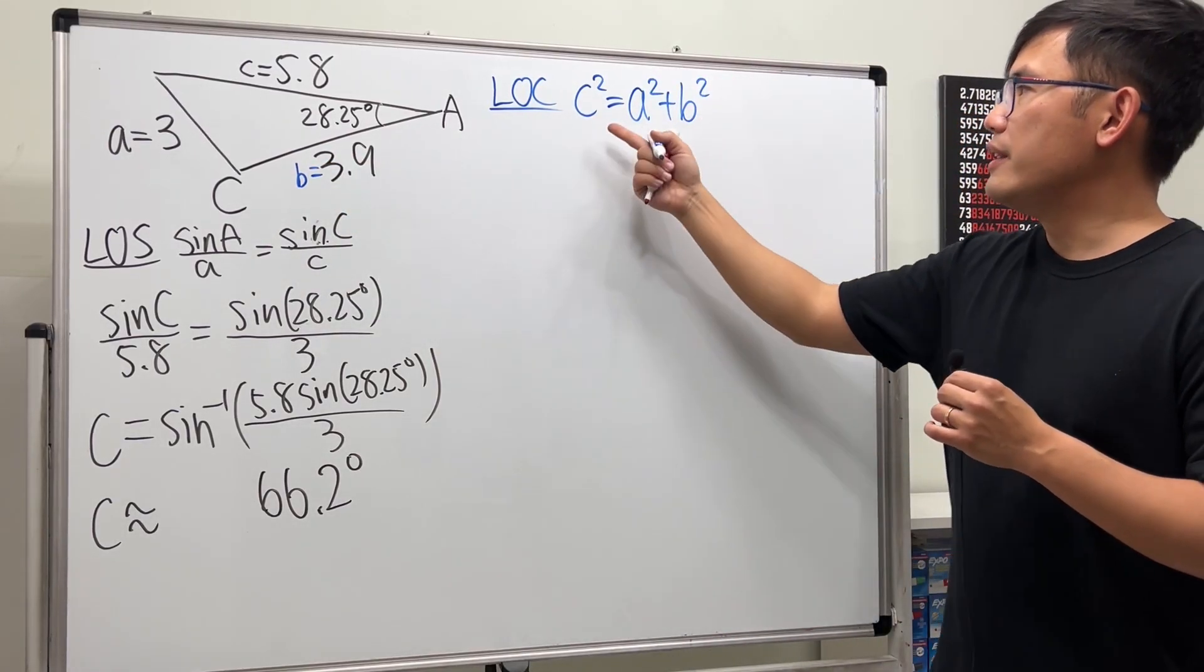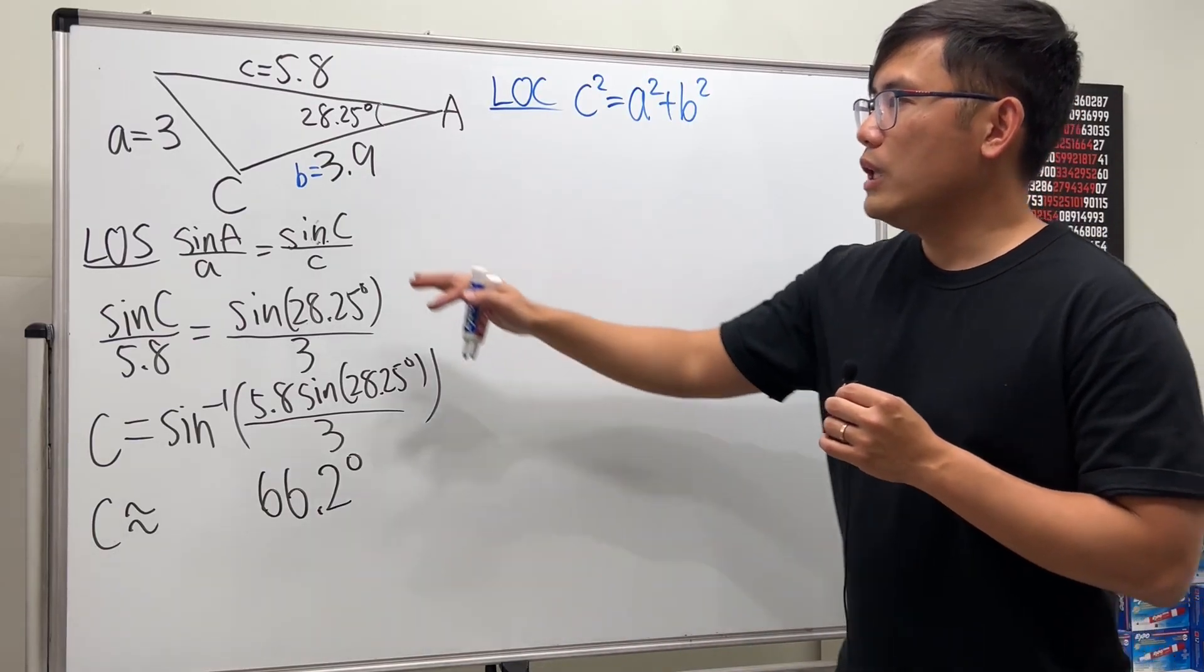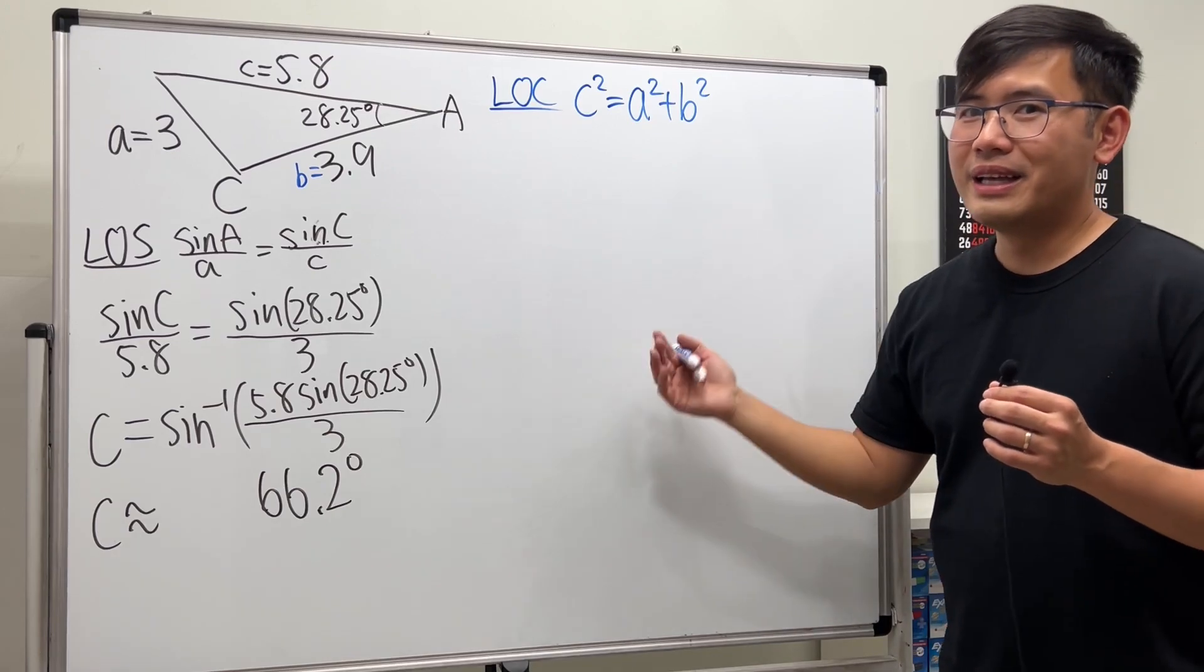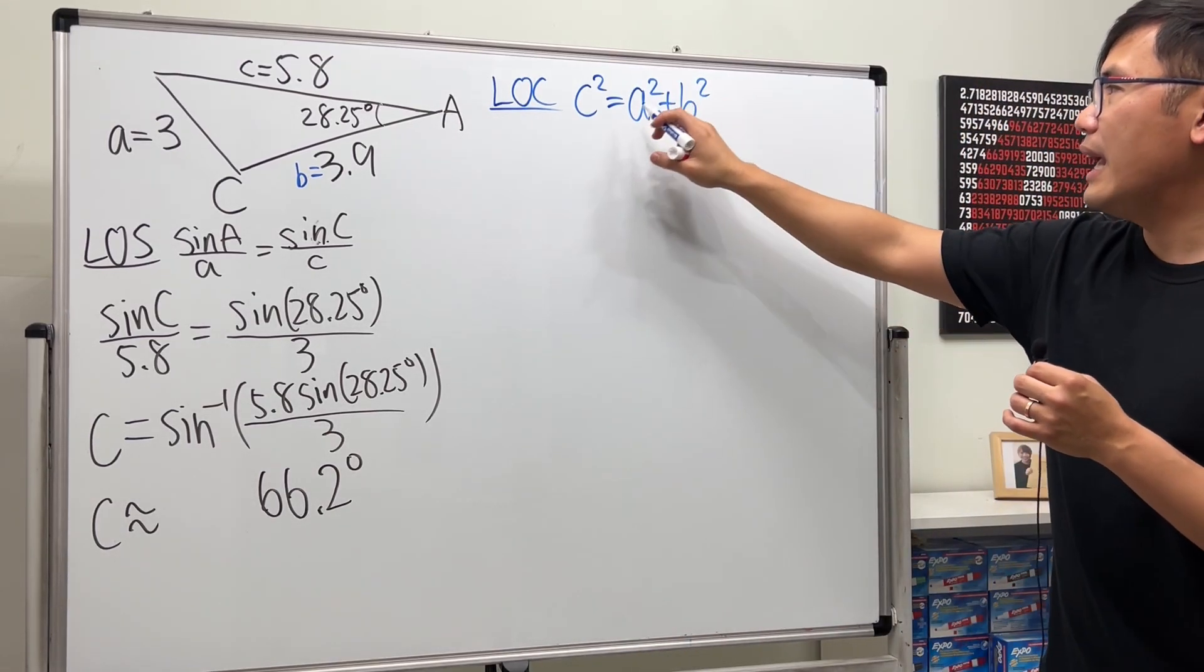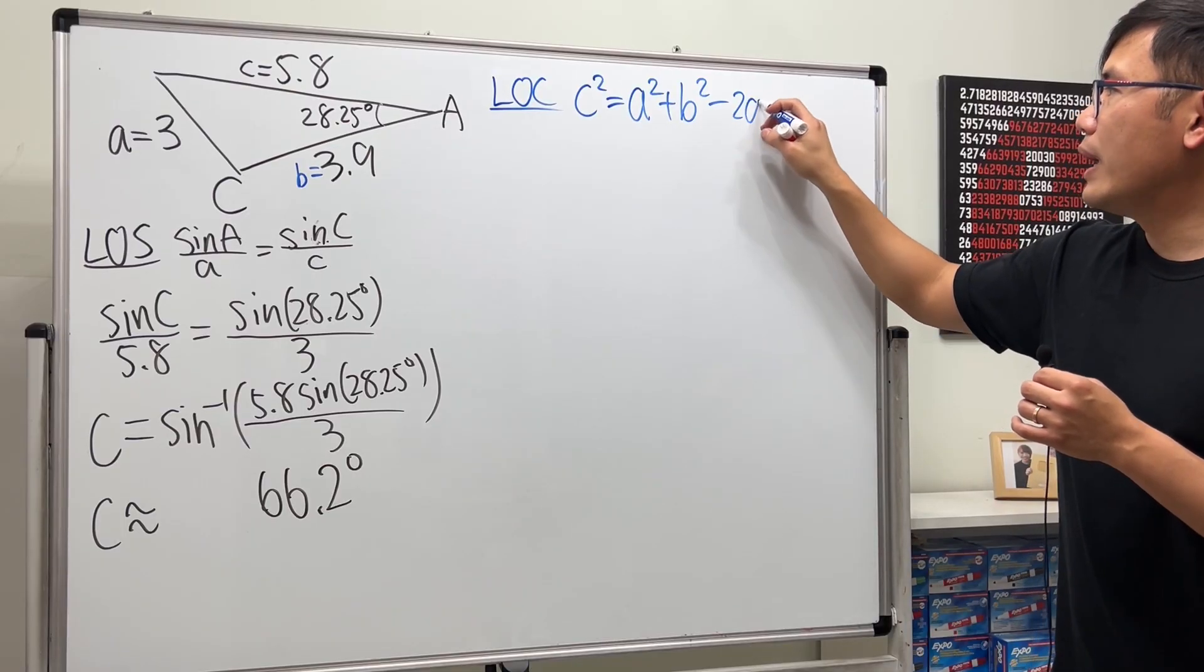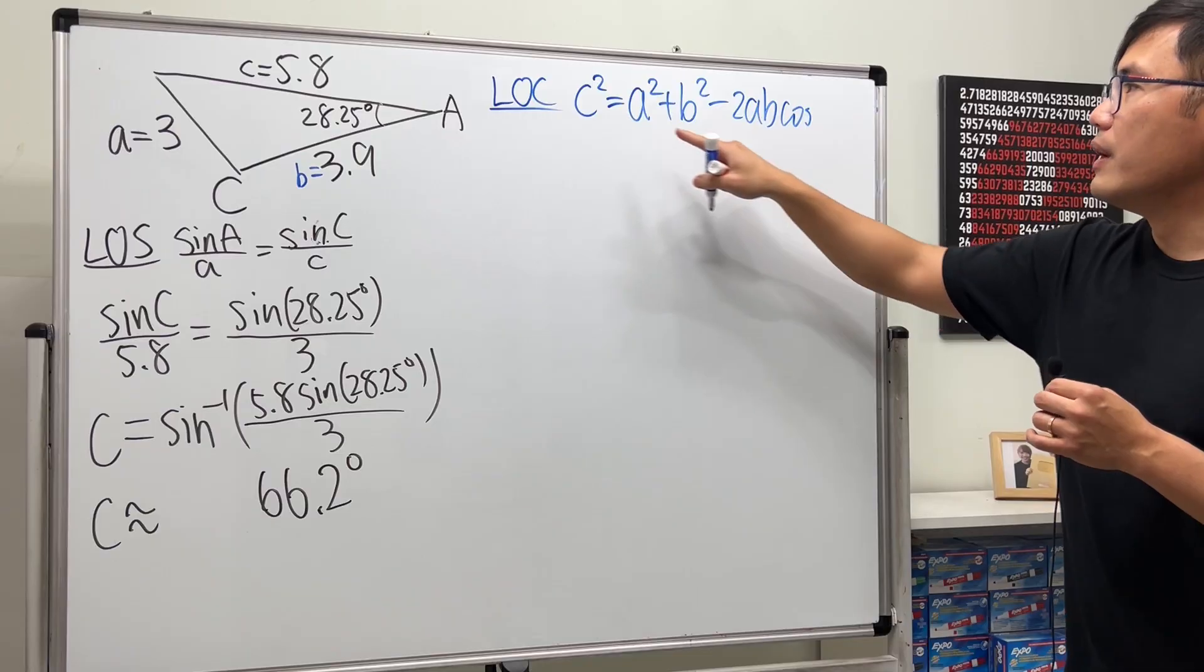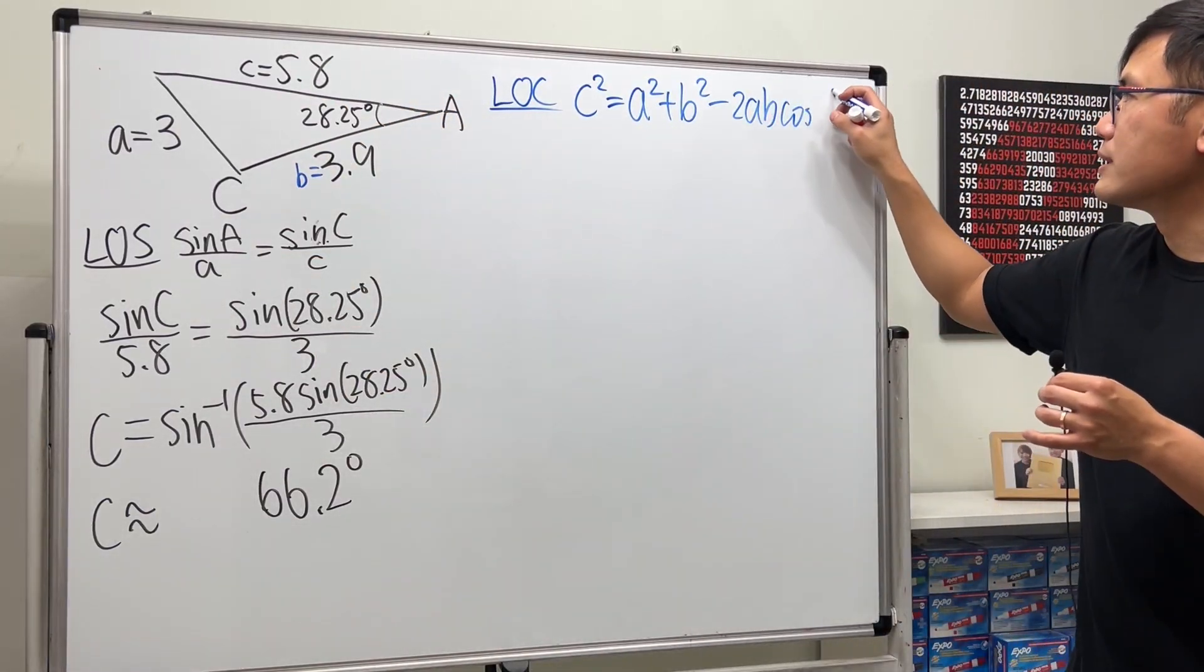And if I just stop right here, then this is, of course, the Pythagorean theorem. However, if we do not have a right triangle, the Pythagorean theorem doesn't hold. So this is not a right triangle, so we will have to look at this as minus 2ab times cosine of this side's corresponding angle, so it's cosine c.